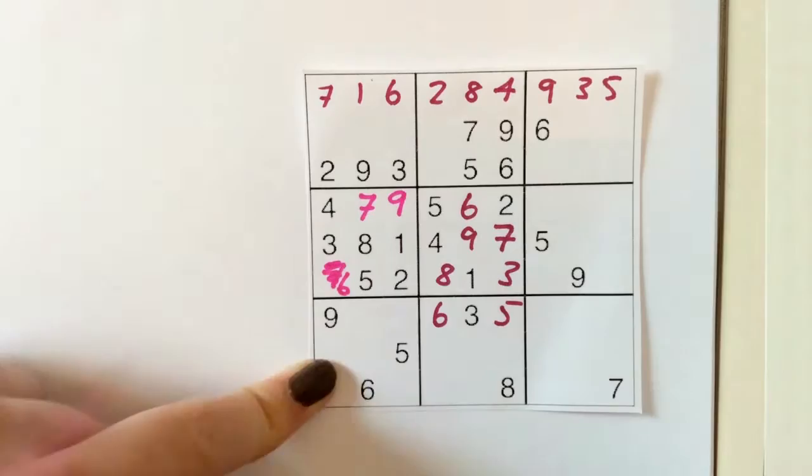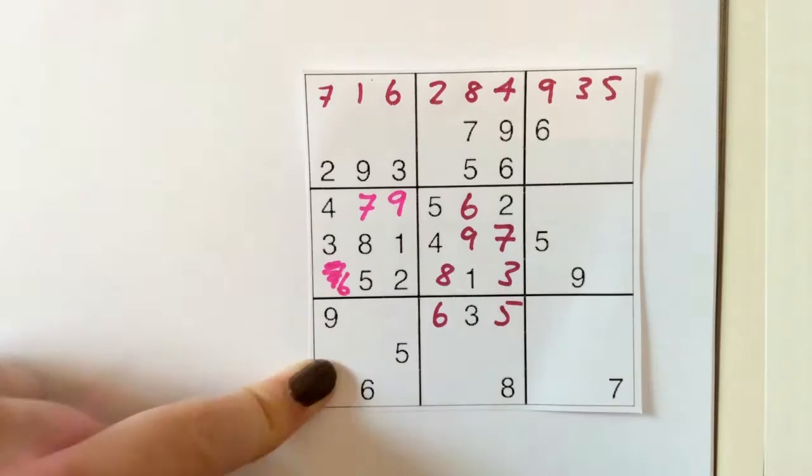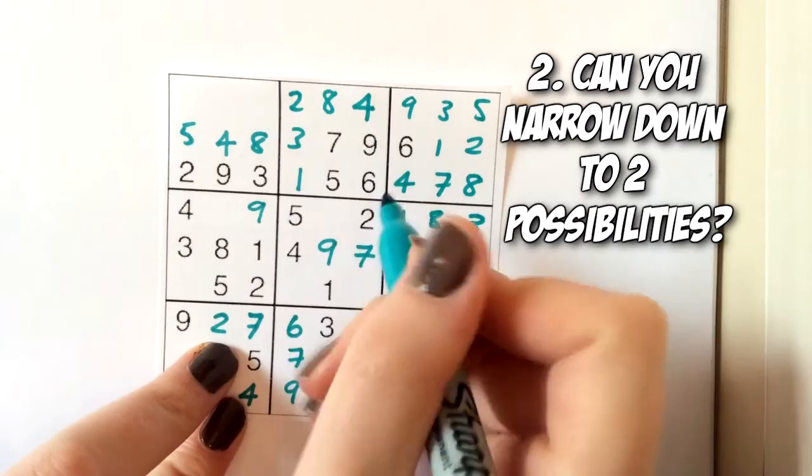Once you've figured out all of these numbers, you'll have to try some other tactics to figure out the solution. For example, narrowing down where a number might go to two possible squares, or assuming a place for a number and then backtracking if you were wrong.